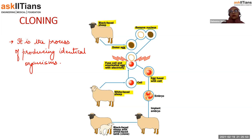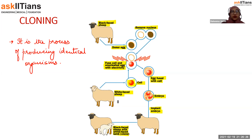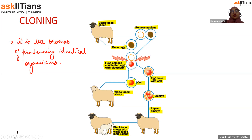The cell containing the nucleus of the white-faced sheep was induced to form an embryo, and this embryo was implanted into another black-faced sheep which acted as a surrogate mother. A white-faced lamb — the clone of the white-faced sheep — was produced, because the nucleus of the white-faced sheep was used for the production of the embryo. This is how Dolly the sheep was produced.